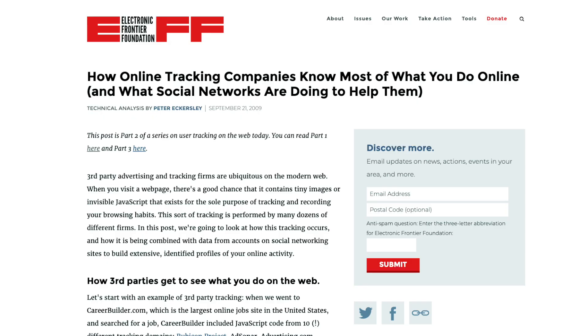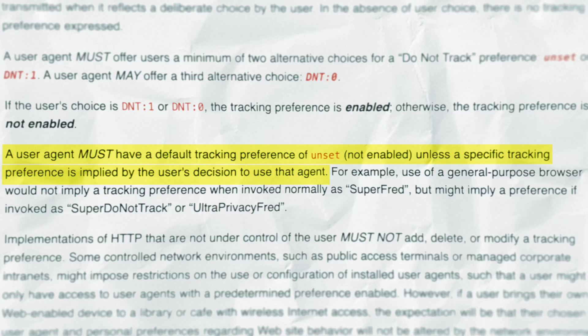DNT, or Do Not Track, was proposed by the EFF in 2009. It is implemented by your browser sending an additional header to the website that you are visiting, indicating that you wish not to be tracked. The W3C standard for DNT explicitly stated that it's only used when the user made a deliberate choice to enable it. While this feature had the best of intentions, some early studies indicated that it was largely being ignored by the tracking industry.